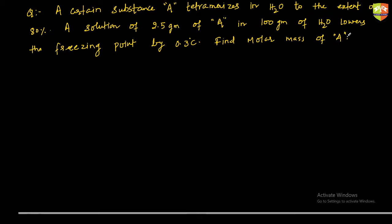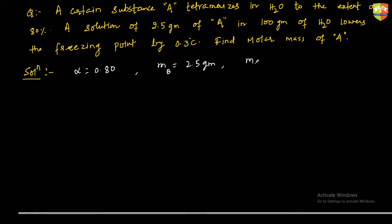Substance A tetramerizes in H₂O, so alpha = 0.80. Mass of solute m_B = 2.5 g, mass of solvent (water) = 100 g, and ΔTf = 0.3 degrees Celsius. We'll use the formula ΔTf = i × Kf × m, so first we need to find i.